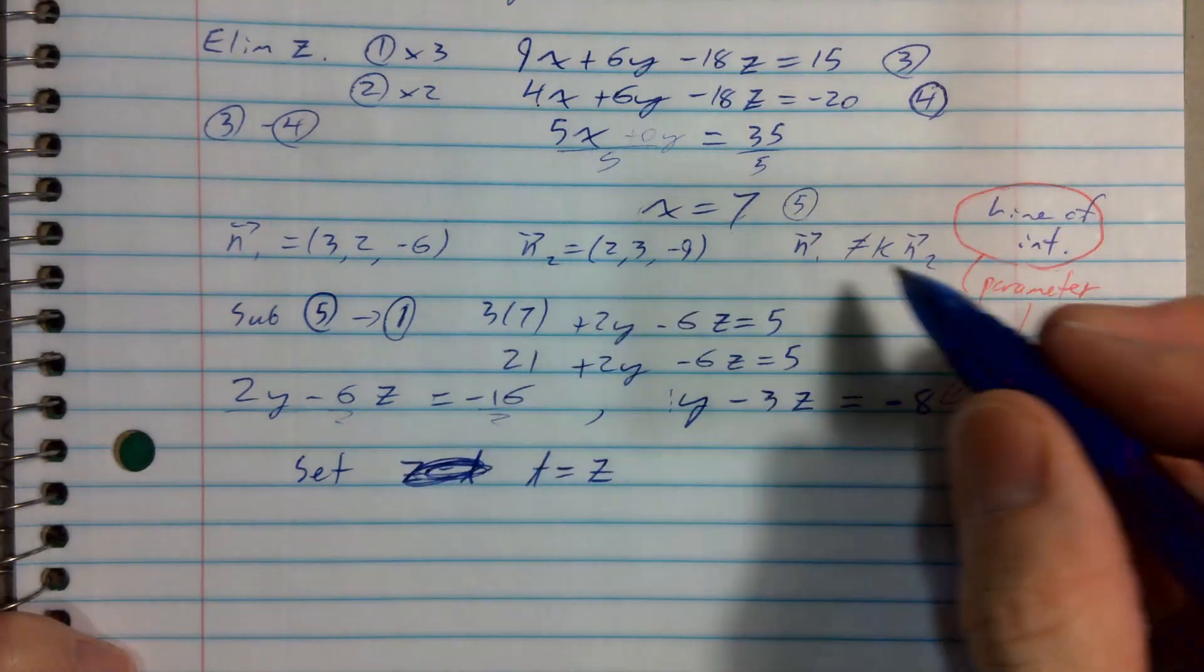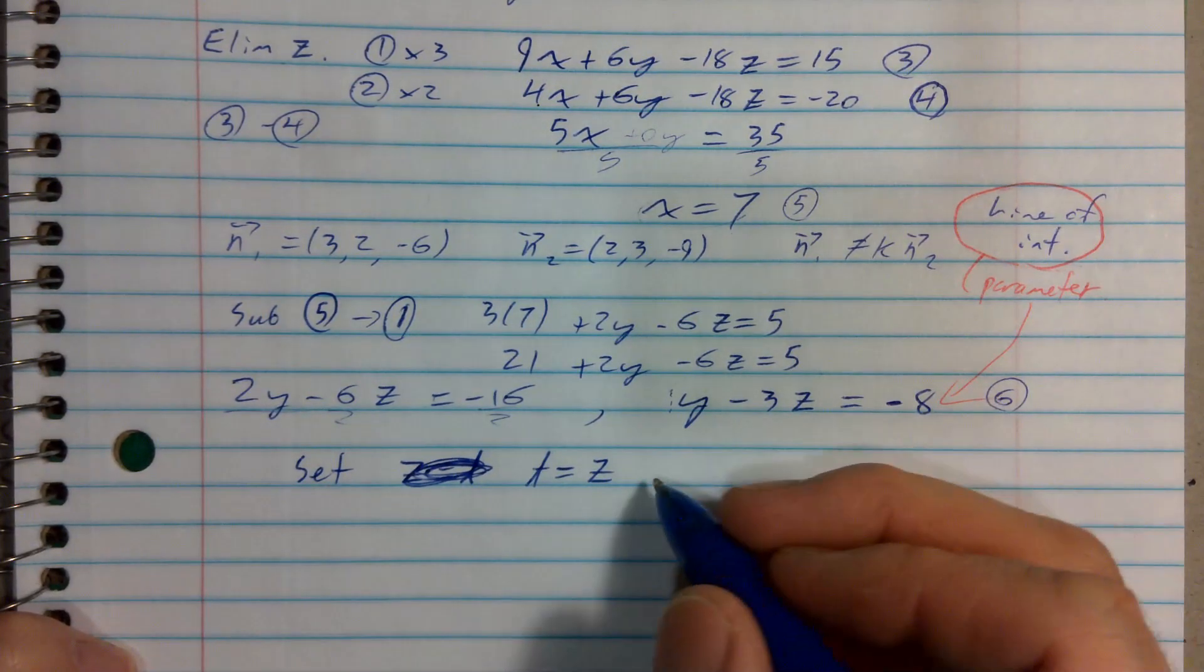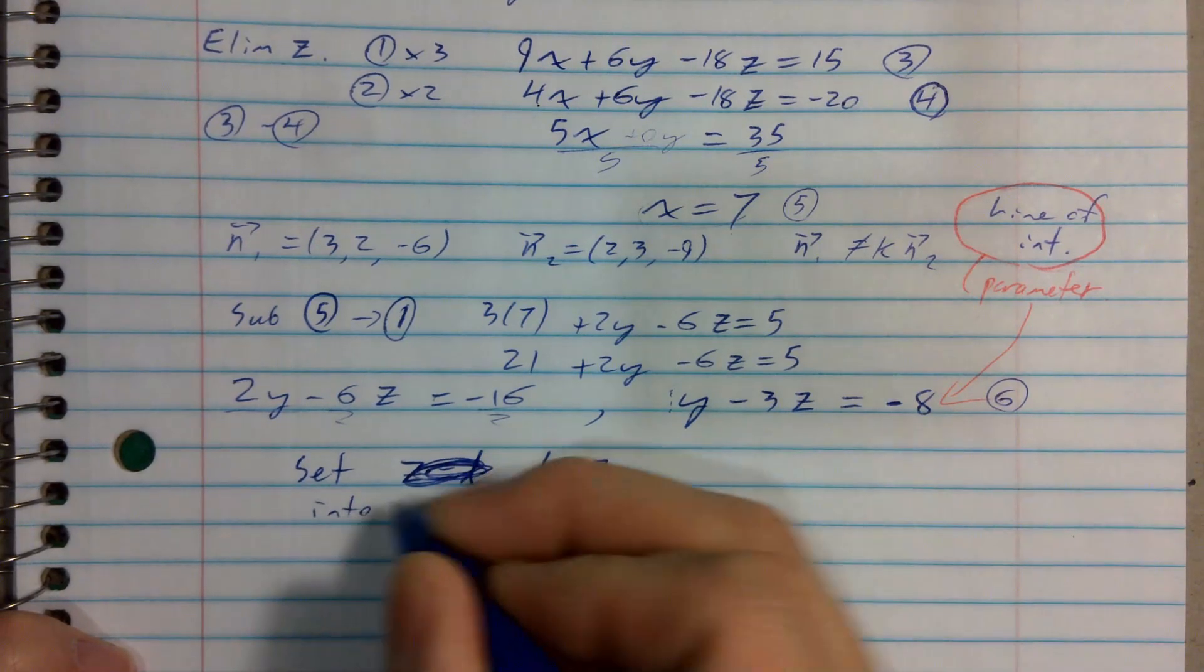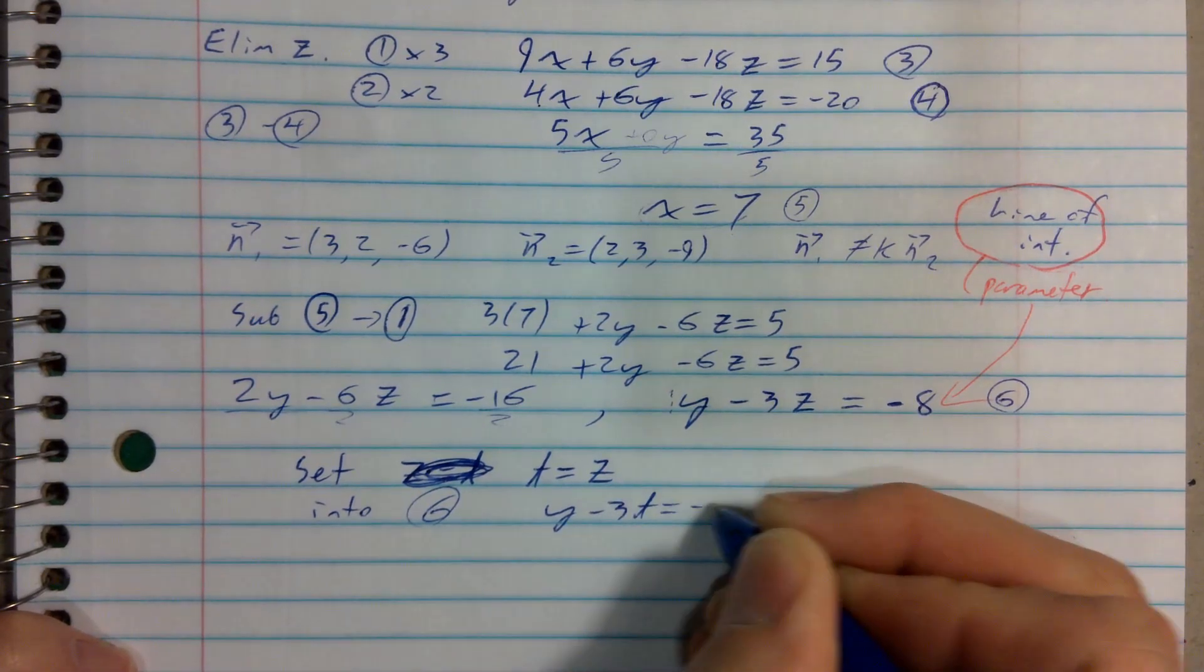Here let's label these equations as well. Let's call this equation 6, maybe this statement 7. Into 6, we get y minus 3t is equal to negative 8.